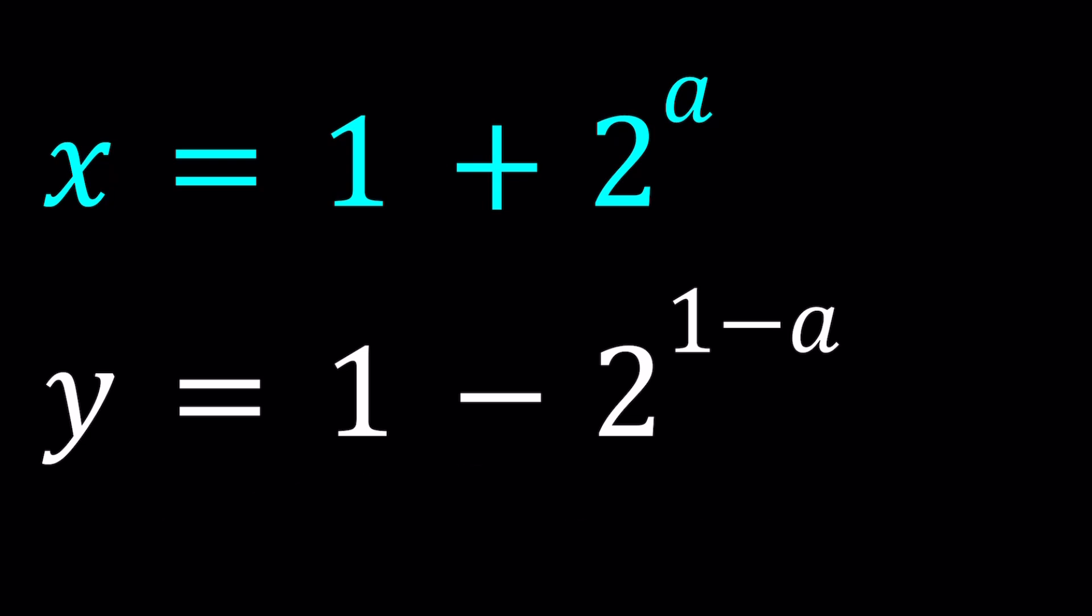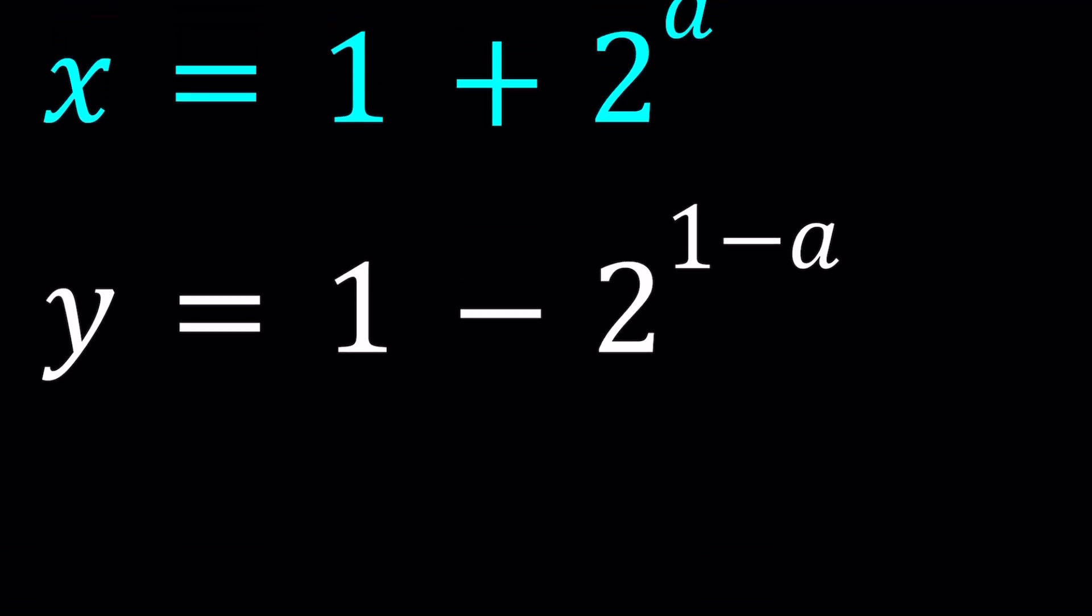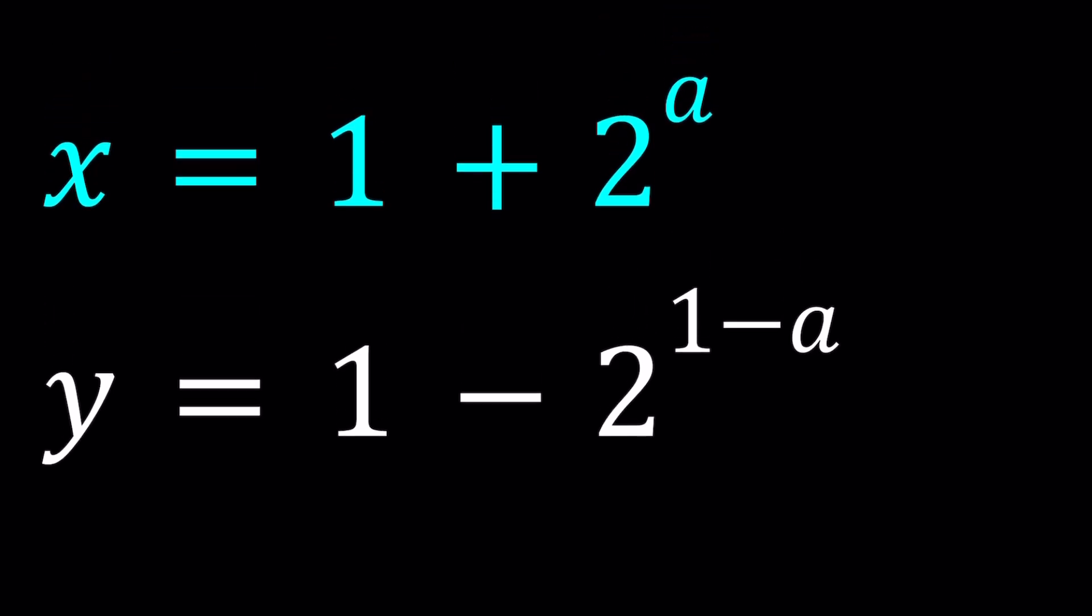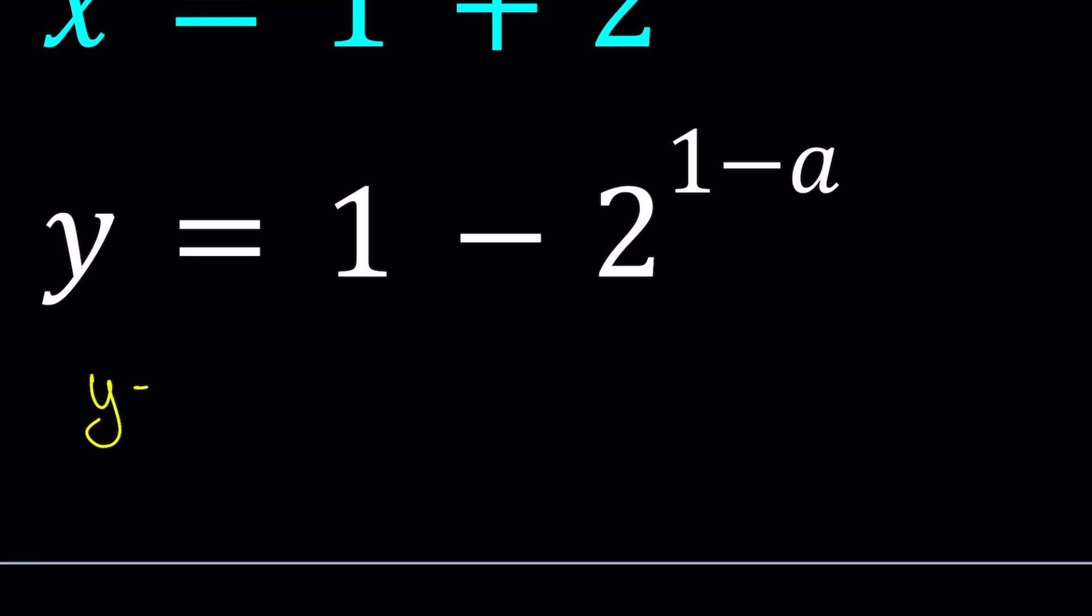So I'm going to go ahead and try to simplify the second equation as much as possible. And my goal is going to be to isolate 2 to the power a, which these two equations seem to have in common. So let's write the y as 1 minus 2 to the power 1 divided by 2 to the power a. Because when you divide powers with the same base, you subtract the exponents. If the exponents are being subtracted, that indicates division.